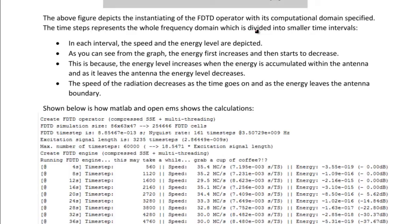Each interval, the speed and energy level are depicted. As you can see from the graph, the energy first increases and starts to decrease. This is due to the energy level increase when the energy is accumulating within the antenna. And as the energy starts to leave the antenna, the energy level also decreases.